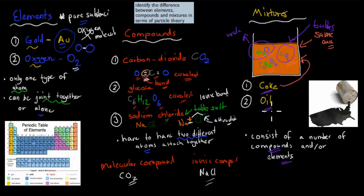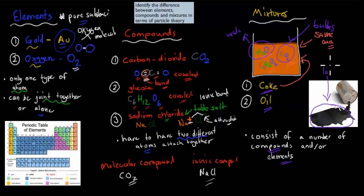Oil is also an example of a mixture. You might think it's all the same stuff, the same elements and compounds, but there are actually 20 to 30 different types of elements and compounds in oil. For example, there's methane gas, there's octane which is petrol, and longer chain carbons as well. So oil is another example of a mixture.